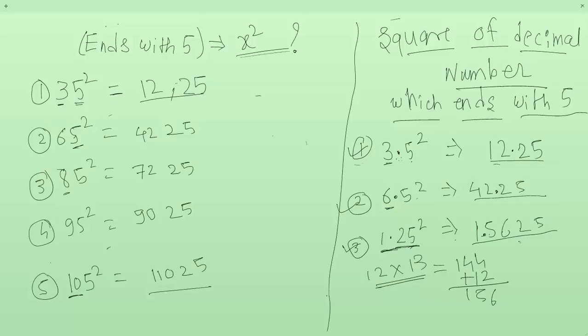Using this approach you can find the square of any decimal number which ends with 5 within 2 seconds.